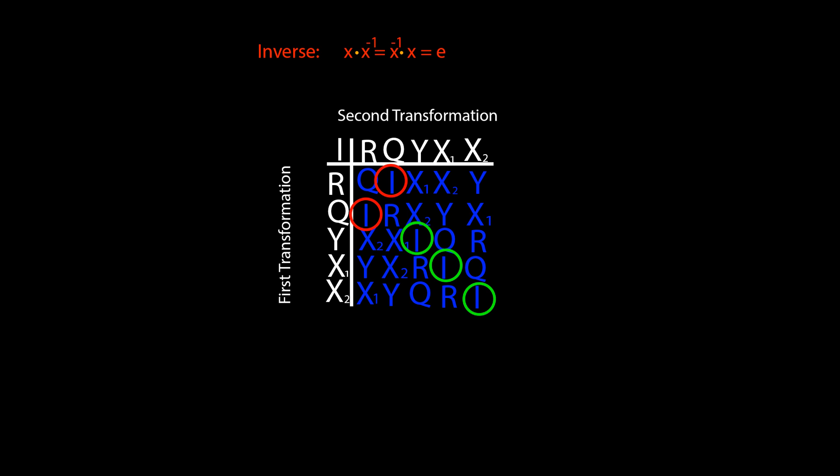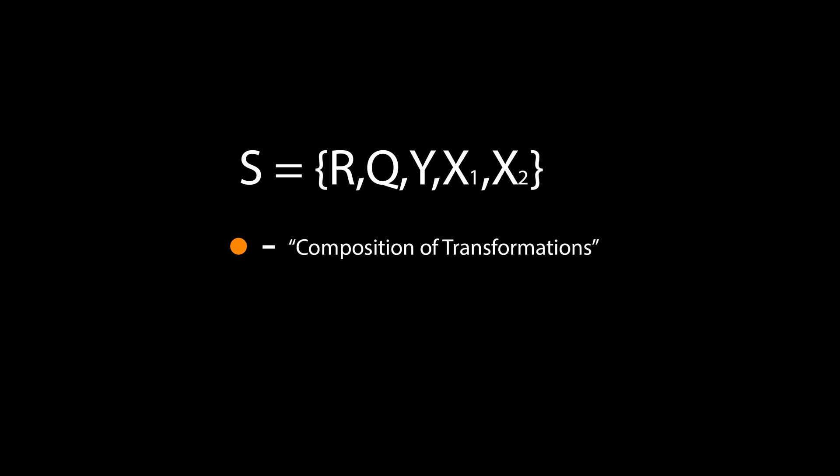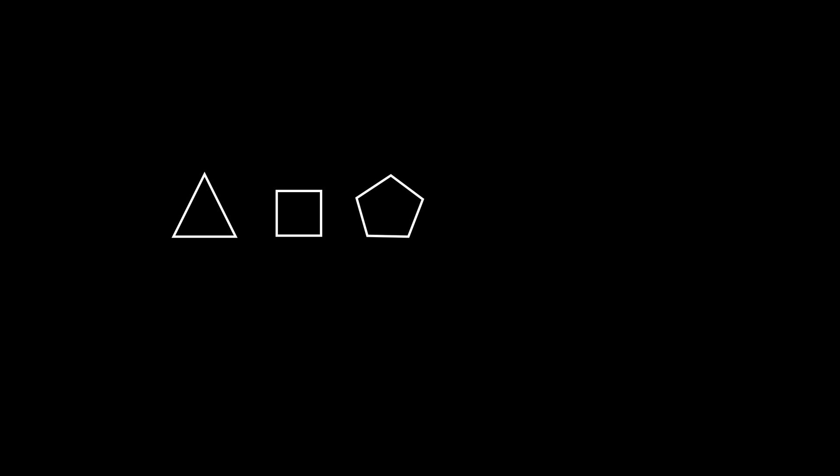So we have shown that for each element in the set, there exists an inverse element. So with this Cayley table, we have successfully shown that the set of transformations on an equilateral triangle, along with the binary operation of composition, forms a group. This might seem quite arbitrary, but in fact it hints at some far more general properties about groups. What we've formed here is a symmetry group of a triangle. It might not surprise you to hear that symmetry groups exist for all regular polygons.